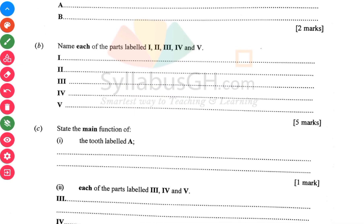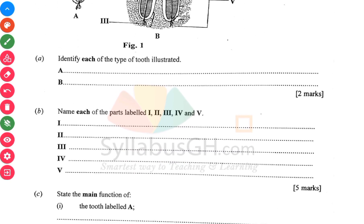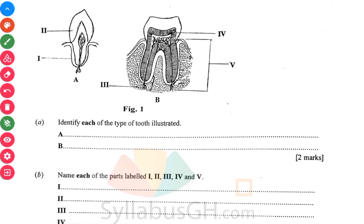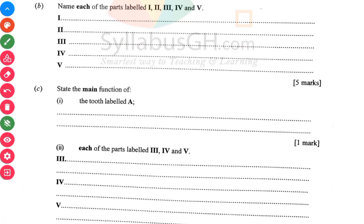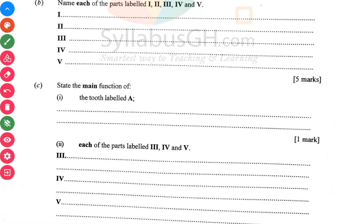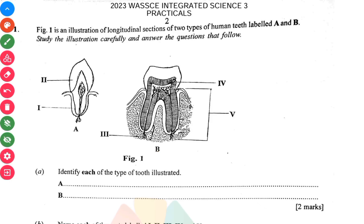Name the main function of A. The main function of the canine is for tearing flesh. Then C says state the function of each part II, III, and V. Your III, assuming you wrote blood vessels, it helps to supply blood and the blood contains nutrients to nourish the tooth.